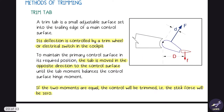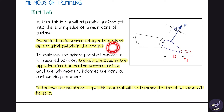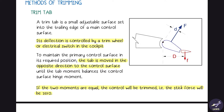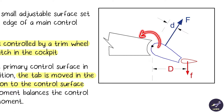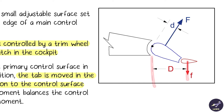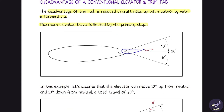The first method of trimming is a trim tab, controlled by a trim wheel or an electrical switch in the cockpit. When you move the trim wheel, the trim tab moves. The tab is moved in the opposite direction to the control surface — if the control surface goes down, the tab moves up. We have two moments: the control surface moment (force times distance from hinge line to center of pressure) and the trim tab moment. When both moments are equal, the stick force becomes zero and the aircraft is trimmed.